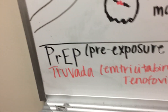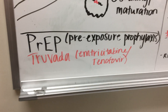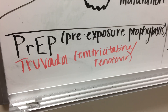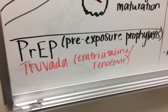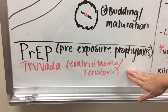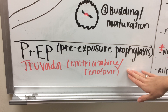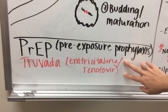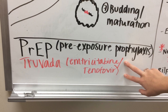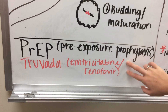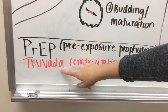Last but not least, we have PrEP therapy — pre-exposure prophylaxis. This is composed of two medications: emtricitabine and tenofovir, both NRTIs. The brand name is Truvada. This medication is administered for patients who are at risk for developing HIV.